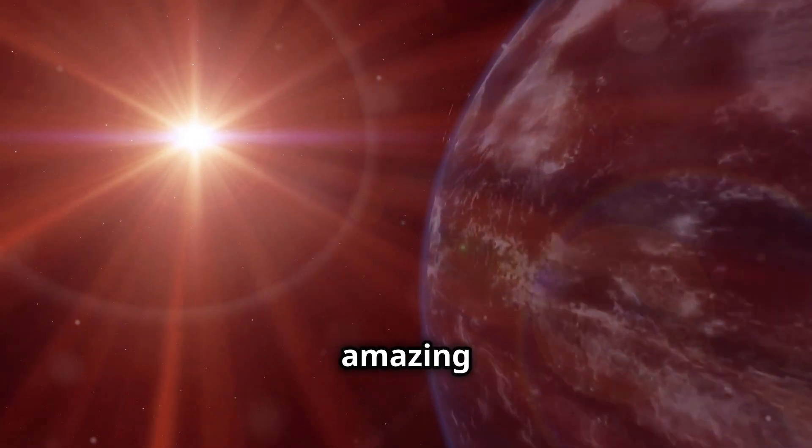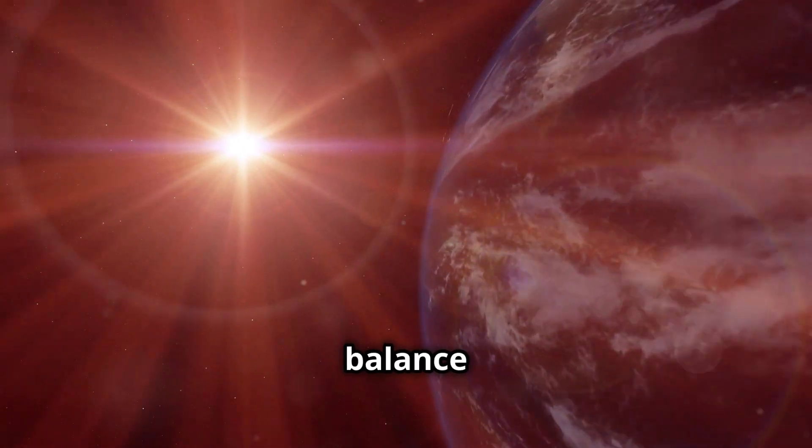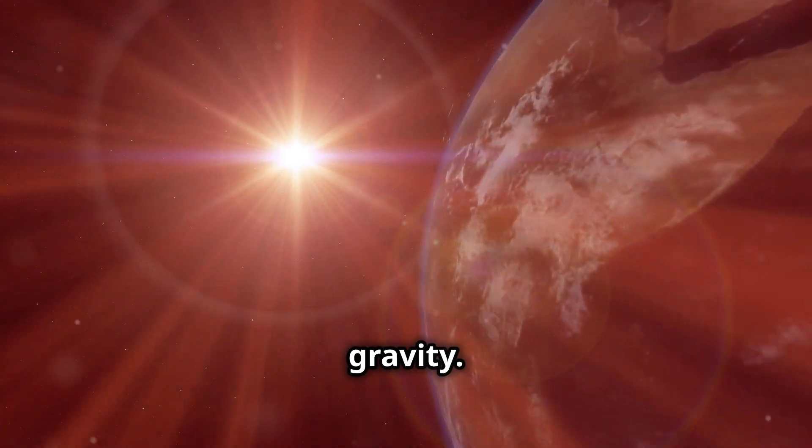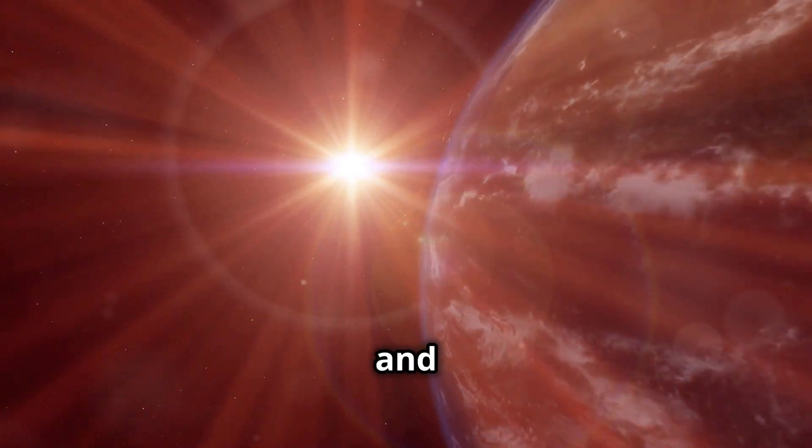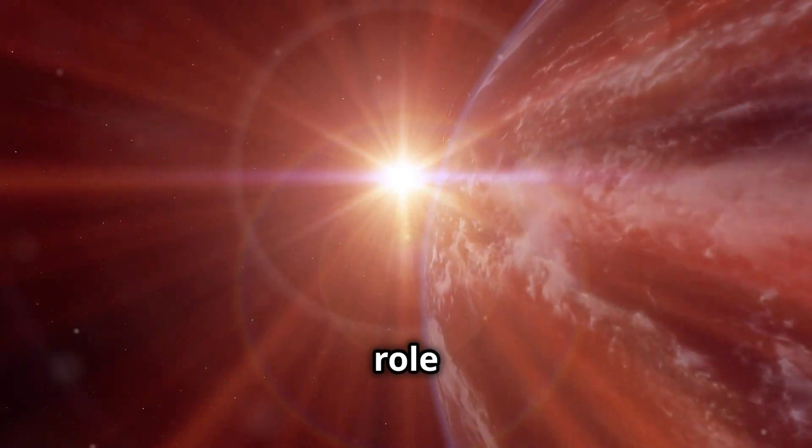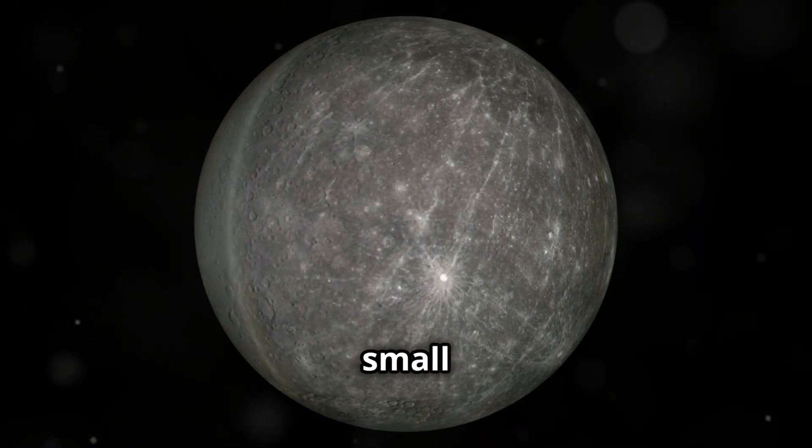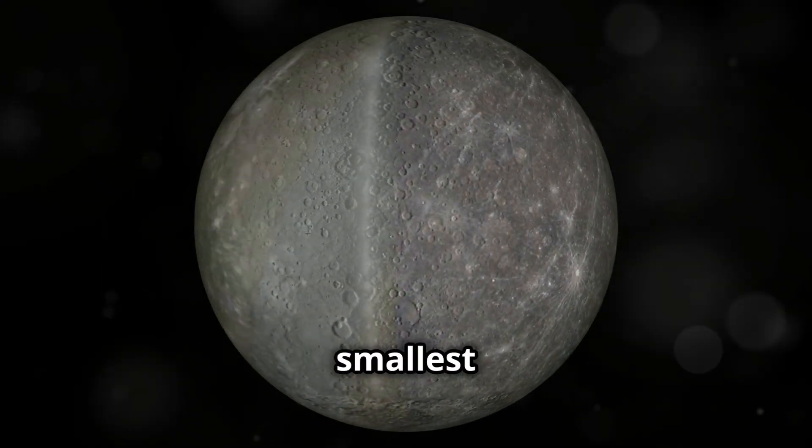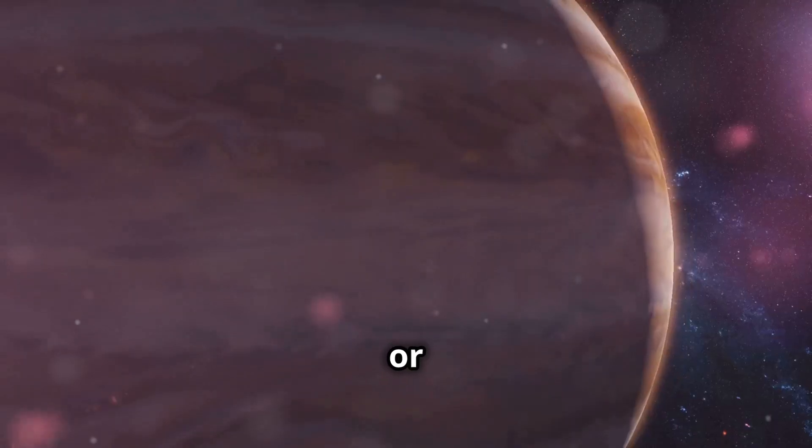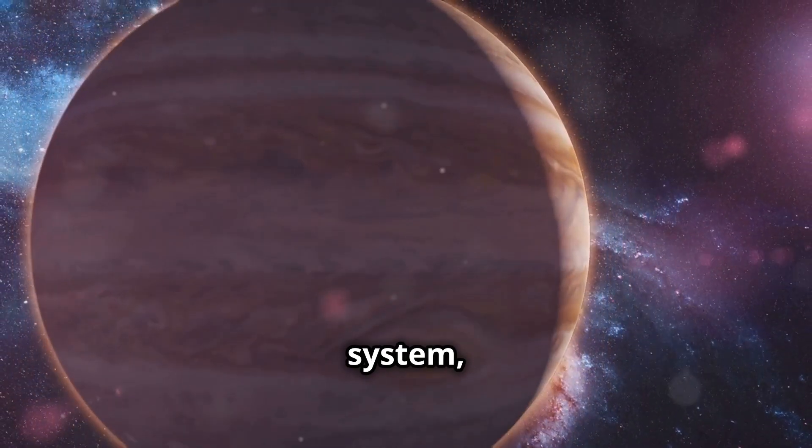The solar system is an amazing place, where everything is in balance thanks to the force of gravity. Every planet, every moon, and even asteroids play a crucial role in this delicate balance. The loss of any of the planets, be it small like Mercury, which is the smallest and closest to the Sun, or giant like Jupiter, the largest planet in our system, would cause a major impact on the functioning of the solar system.